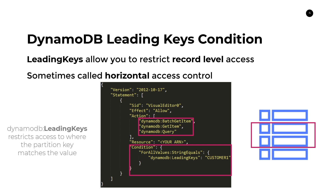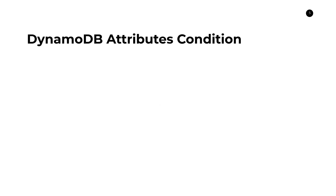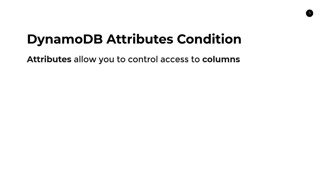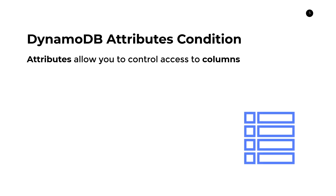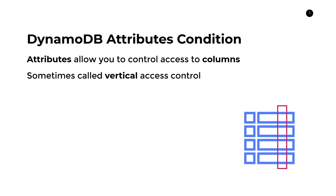So that's how you restrict access to certain rows. Now what about columns? To restrict access to columns, you need to use something called DynamoDB attributes. Attributes allow you to control access to columns — this is a vertical scope or vertical access control, where you only want to specify access to certain columns in your table.